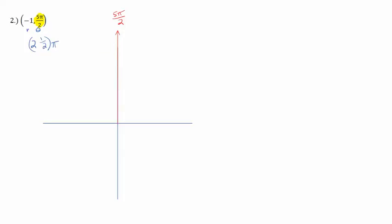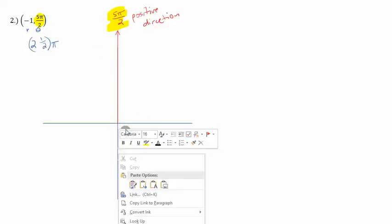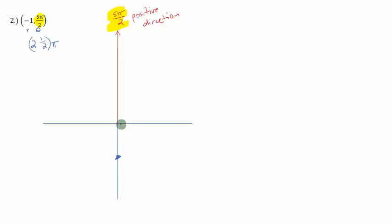But then, our r value is negative 1. So I rotate and I face the direction of 5π over 2. This is my positive direction. The angle that is given determines your positive axis, your positive direction. So I actually need to walk the other way one unit. So I'm actually going to go down one unit and get this point here. I know this distance here is 1. So this is the point we're working with.